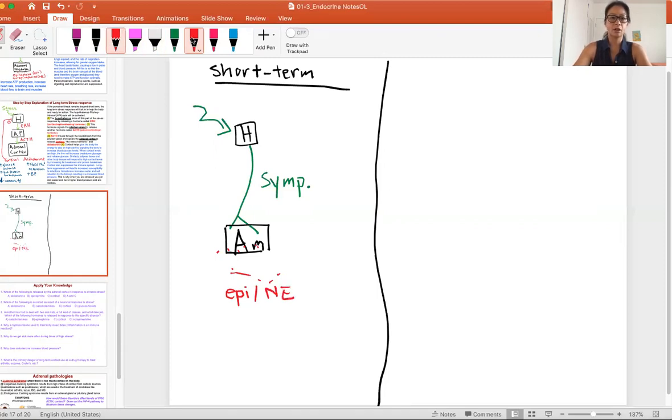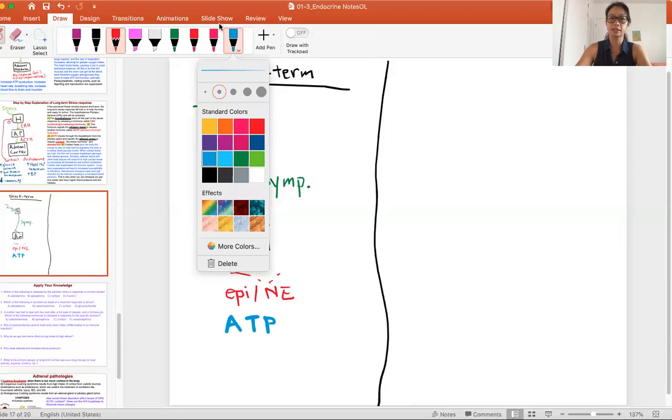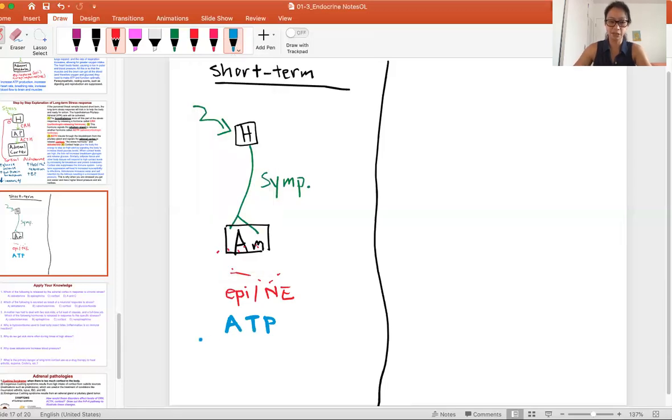That hormone creates a response to react to that short-term stress. Someone cuts you off and you're going to hit them. The response you get is you want to generate ATP. Remember back to that first lecture on metabolism. You want to make sure you have an increase in oxygen and an increase in glucose.